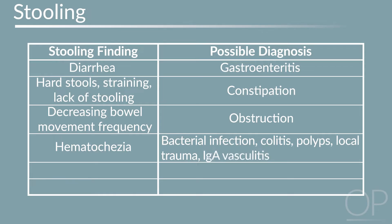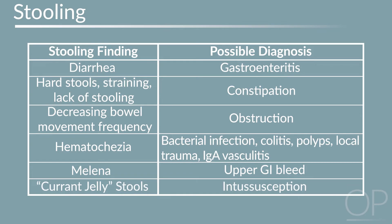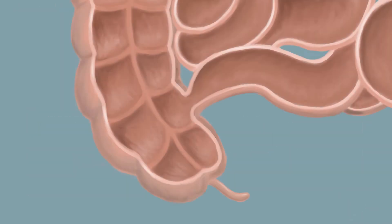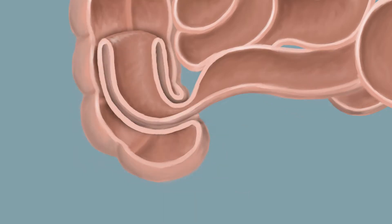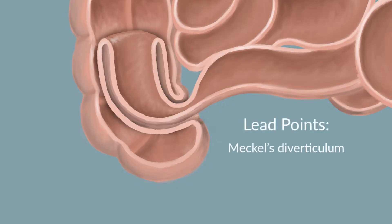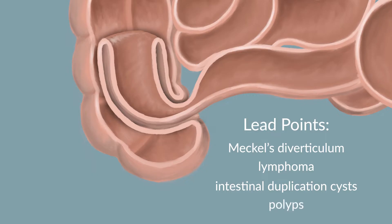IgA vasculitis may present with bloody stools in children of any age, although it is most common around age five. Upper GI bleeding can present with melena, elicited by asking about dark, maroon, or tarry stools. The classic finding of currant jelly stool is highly suspicious for intussusception, particularly in patients aged six months to three years. This occurs when a portion of the bowel, usually involving the terminal ileum and cecum, folds into itself leading to obstructed blood supply and bowel ischemia. Meckel's diverticulum, lymphoma, intestinal duplication cysts, and polyps may serve as lead points.